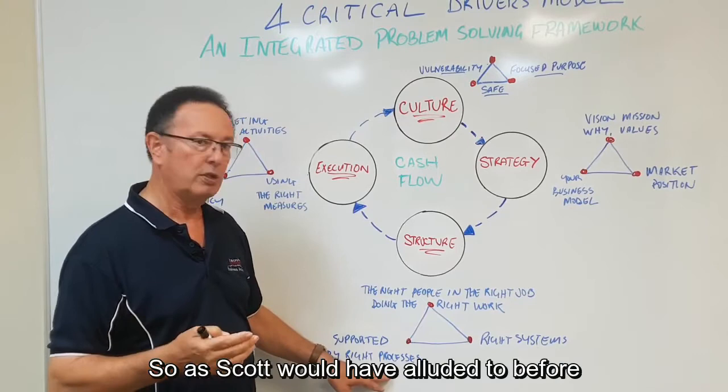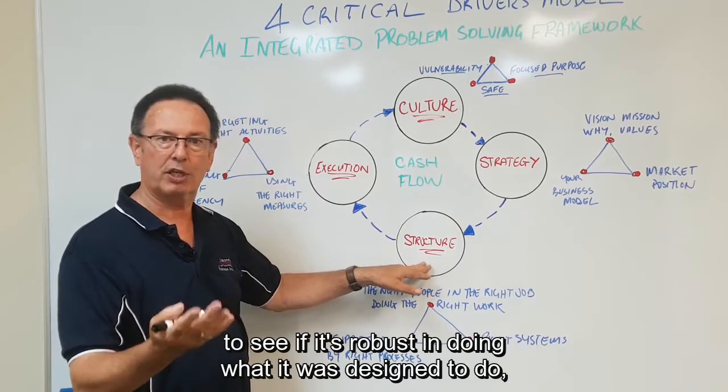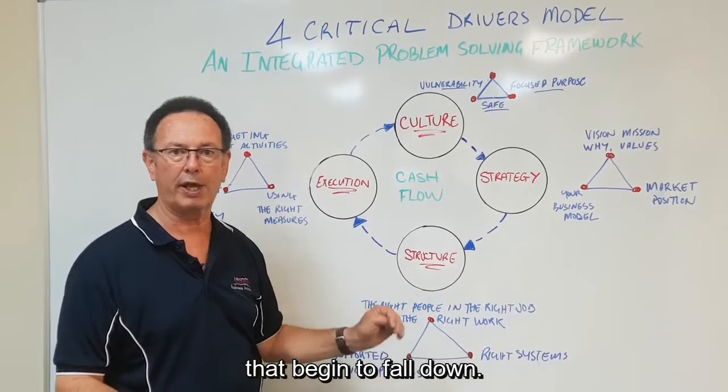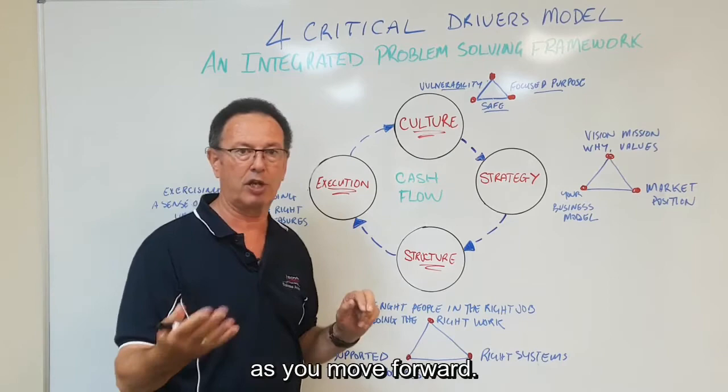So as Scott would have alluded to before, when we find that we're not getting the execution and we go back a step and we check the other critical driver to see if it's robust and doing what it was designed to do, quite often we find these are the elements that begin to fall down. It gives you a very quick way of identifying what you're going to address and then see whether you get a better result as you move forward.